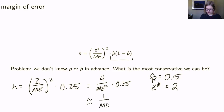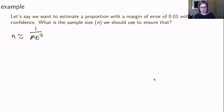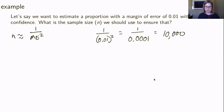Using p-hat equals 0.5 and z* approximately 2, n equals (2 / margin of error)² times 0.25, which simplifies to 4 over margin of error squared times 0.25, giving us the approximation n ≈ 1 / (margin of error)². For example, to estimate a proportion with a margin of error of 0.01 with 95% confidence, n equals 1 over 0.01 squared, which is 1 over 0.0001, or 10,000 people.